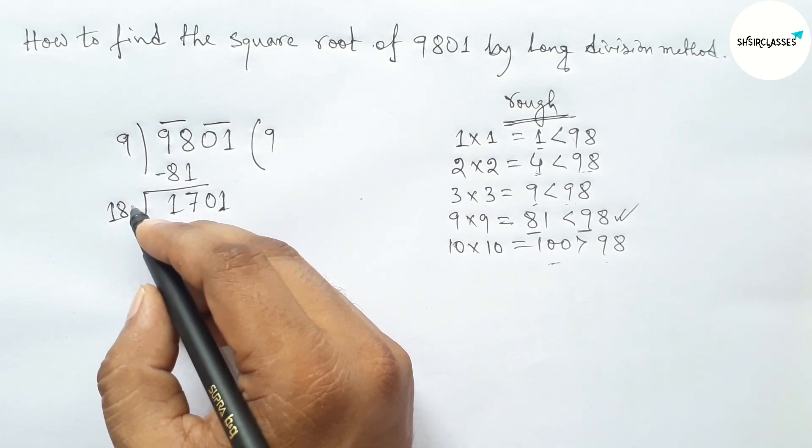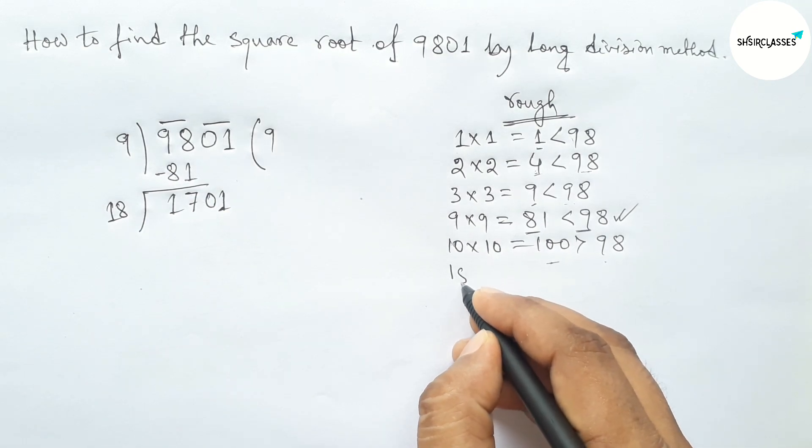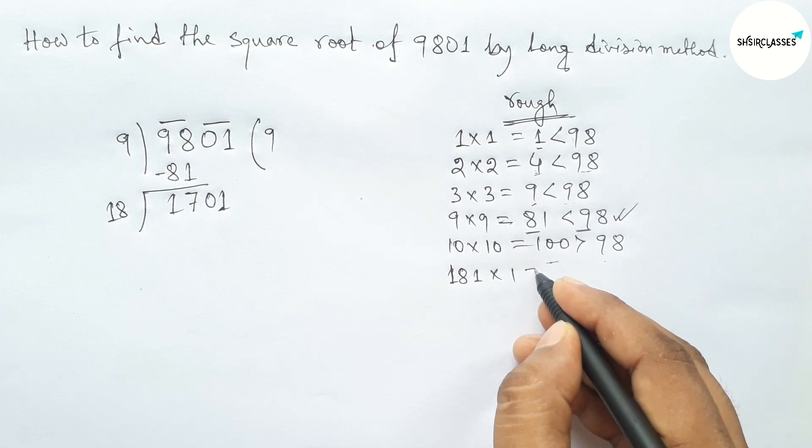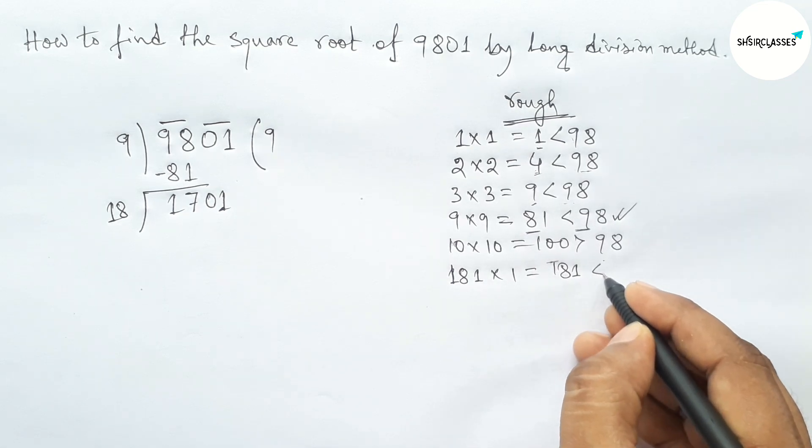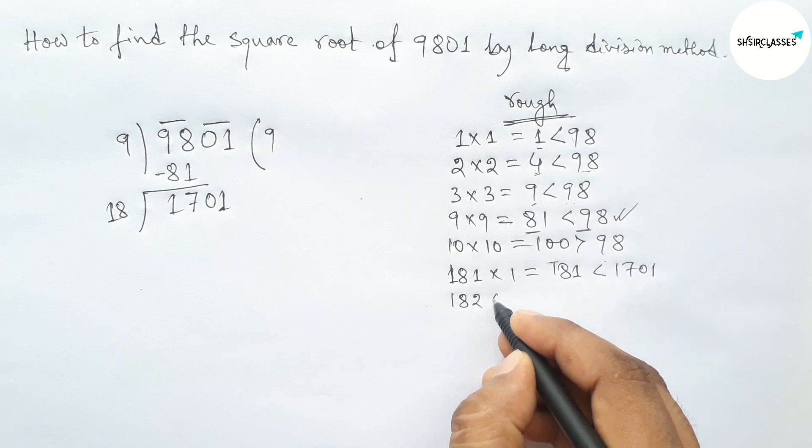And next, taking a number beside 18 and multiplying by that number which is less than or equal to 1701. So first taking here 1 and multiplying by 1, so this is less than 1701. Next taking 2 and multiplying by 2, so 364, which is less than 1701.